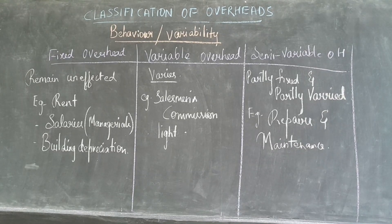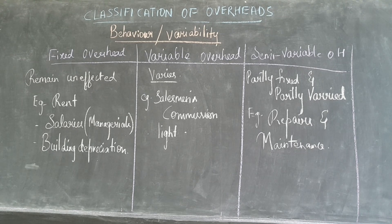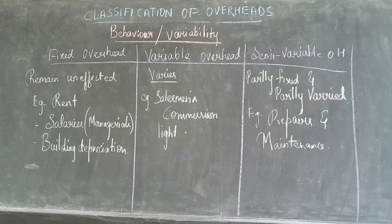When we see the classification based on behavior or variability, we have three classifications: one is fixed overhead, second is variable overhead, and third is semi-variable overhead.